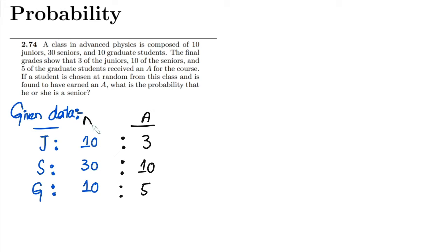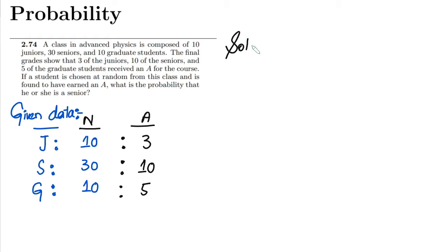These are the total number of students, and these are the symbols I have been using for different categories. If a student is chosen at random from this class and is found to have earned an A, what is the probability that he or she is a senior?